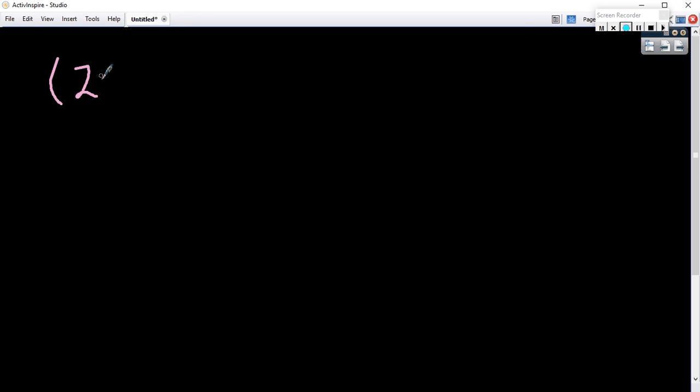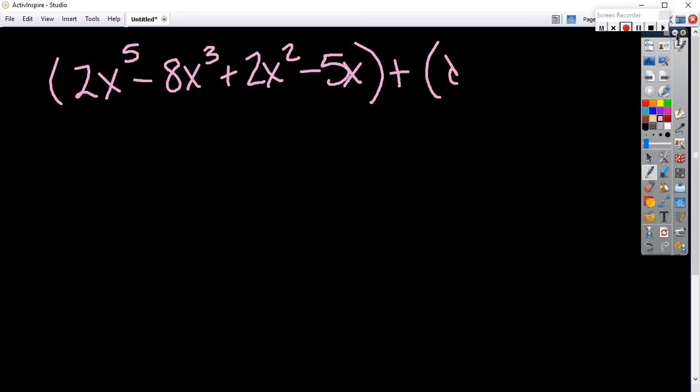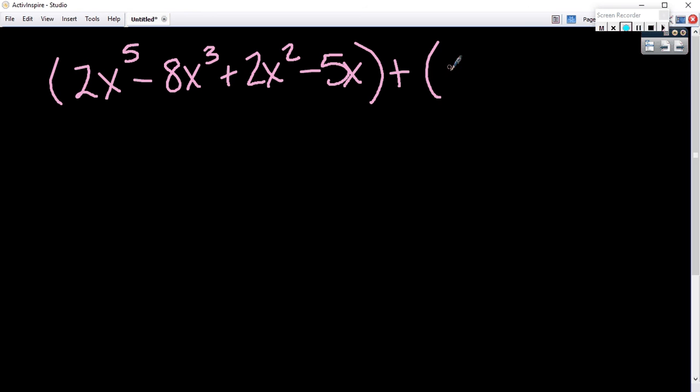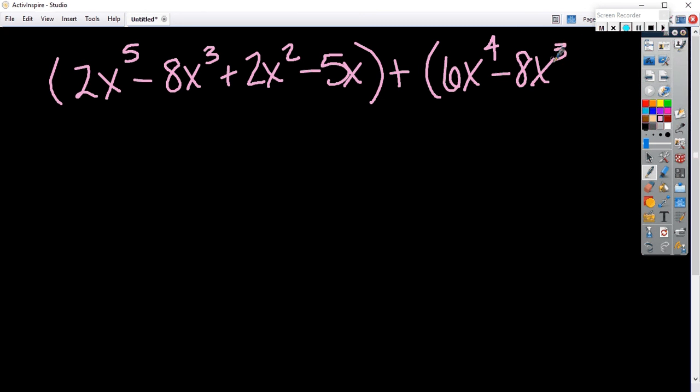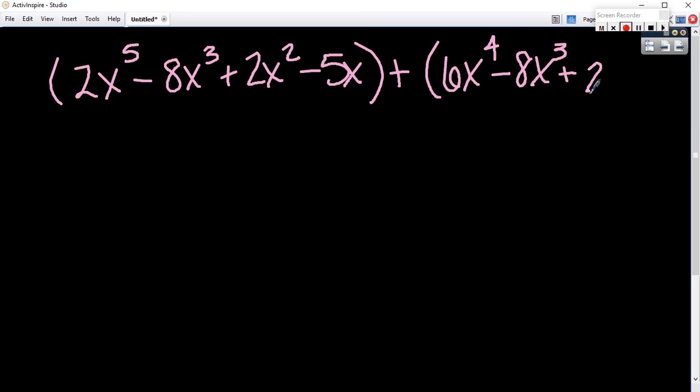Let's say I have 2x to the fifth minus 8x to the third plus 2x squared minus 5x plus... Wait till we get to multiplication. I'll give you all a second. 6x to the fourth minus 8x squared. Actually, let's do minus 8x cubed. Here we go.